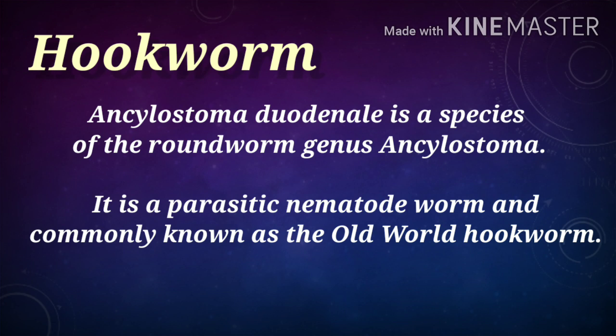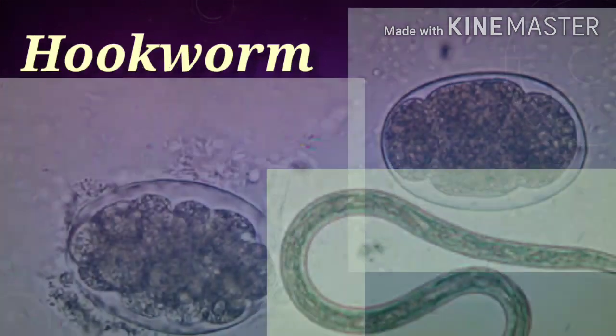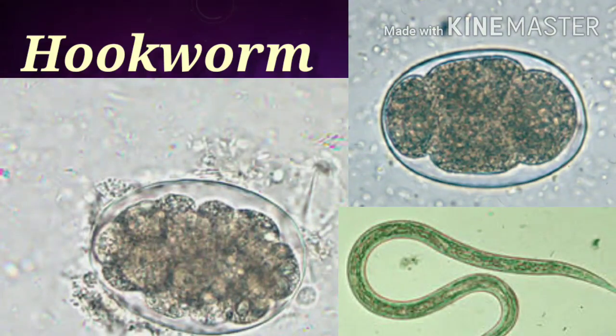Ancylostoma is a species of the roundworm genus Ancylostoma. It is a parasitic nematode worm, commonly known as the old-world hookworm. The hookworm egg and worm are shown in this picture.